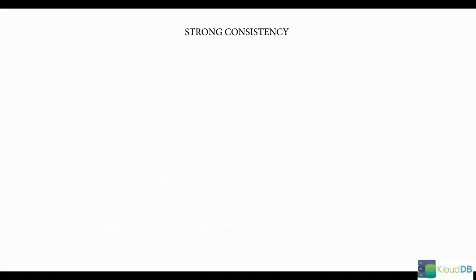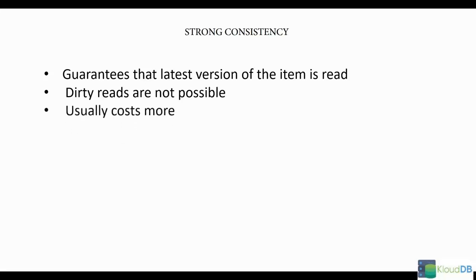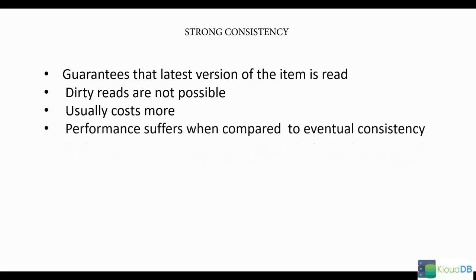Let us explore strong consistency. Strong consistency guarantees that the latest version of the item is read because it does not randomly read from any of the three availability zones. Instead, it verifies that the item is consistent across all the availability zones. Dirty reads are not possible when you use strong consistency — reading older or stale data does not happen. However, this costs more and performance suffers when compared to eventual consistency.